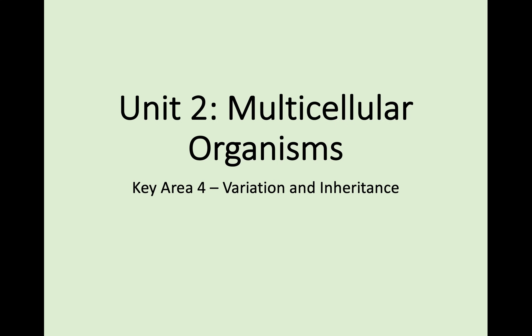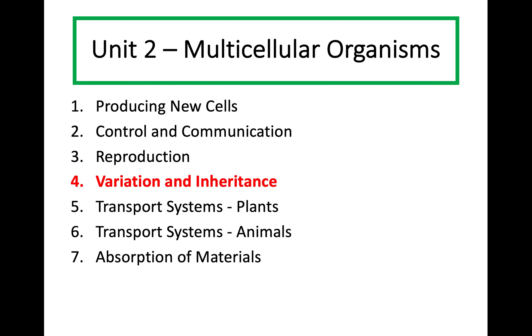Hi everyone and welcome back to National 5 Biology. We're continuing with Unit 2 Multicellular Organisms today and going on to Key Area 4 which is Variation and Inheritance. This is a key area that often people find quite tricky, so I really recommend that you go through these notes. There'll be a lot of new terminology being thrown at you, so try and take some notes, highlight the bits that I highlight, and give a go at the calculations that appear later on.